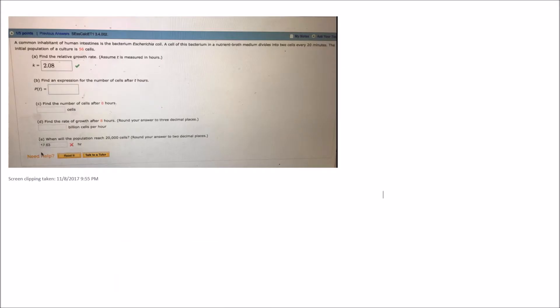All right, so let's take a look at this question here. It says a common inhabitant of human intestines is the bacteria given there. A cell of this bacterium in a nutrient broth medium divides into two cells every 20 minutes. The initial population of the culture is 56 cells.